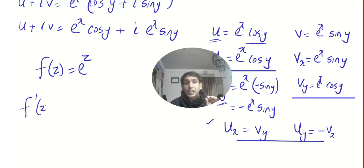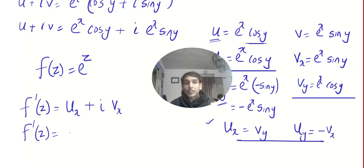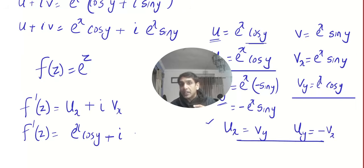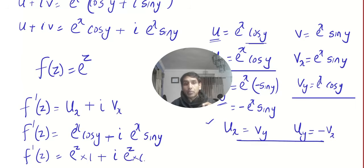To find the derivative in terms of z using the Milne-Thompson method, we write ux + i·vx. So we have e^x·cos y + i·e^x·sin y. Now apply the trick: replace x with z and y with 0. cos(0) = 1, and sin(0) = 0. So we end up with e^z, which is the derivative.